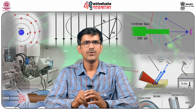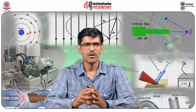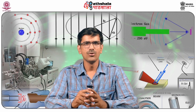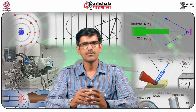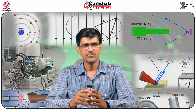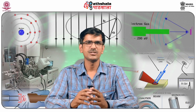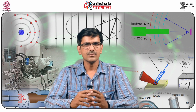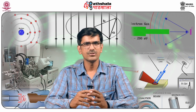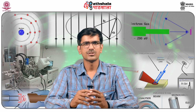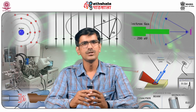The spin quantum number, represented by small s, describes an electron spinning on its own axis. There are two possible directions of spin — plus half and minus half — known as clockwise and anticlockwise. A spinning charge generates a magnetic field, and an electron has a magnetic field associated with it. The electrons in the same orbital are most stable when they have opposite spins (plus half and minus half) due to magnetic attractions.